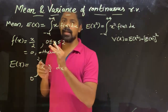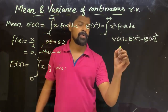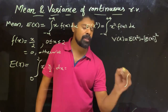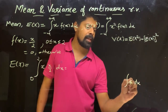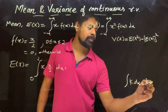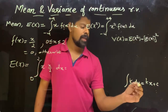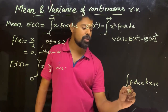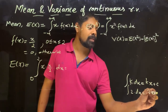We can do a little bit of integration. The integral of a constant k dx is kx plus C. For example, the integral of 2 dx is 2x plus C. The integral of x dx is x squared by 2.